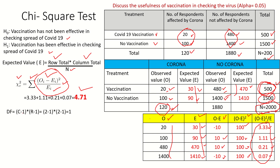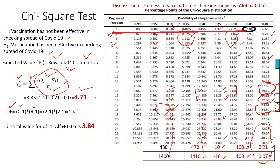Next we look up the table value. We need to calculate the degree of freedom. The formula is: (number of columns − 1) × (number of rows − 1). We have 2 columns and 2 rows, so degrees of freedom = (2−1) × (2−1) = 1. At a level of significance α = 0.05 with 1 degree of freedom, the chi-square critical table value is 3.84.